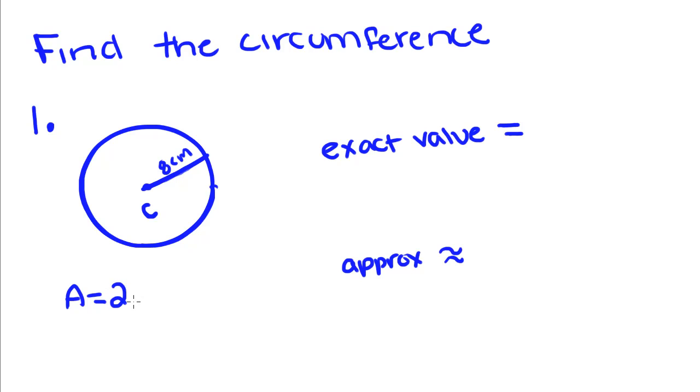So for an exact value, we'll get 16 pi. For an approximation, we'll get 16 times 3.14. If you plug that into a calculator, you'll get 15.24.